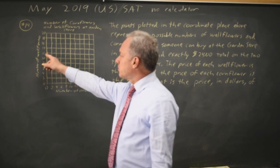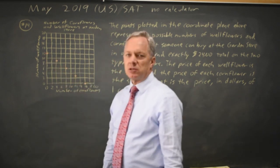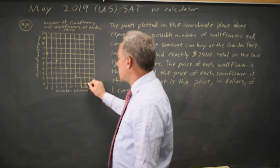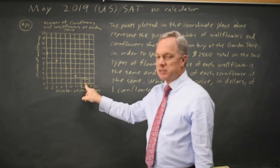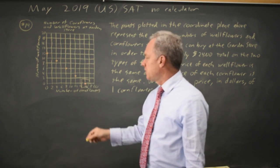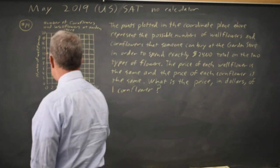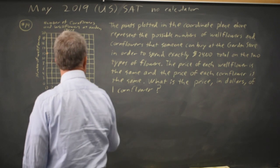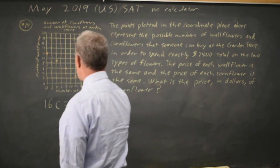To answer this, I could write a system of equations relating two points, but the easy way is to notice that this last point here — zero wallflowers and 16 cornflowers — tells us that 16 times C, where C is the price of one cornflower, equals our total amount spent, which is $24.